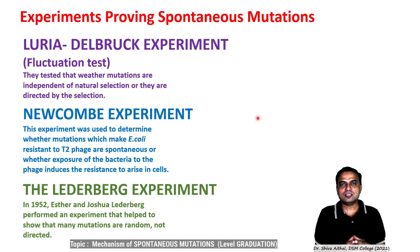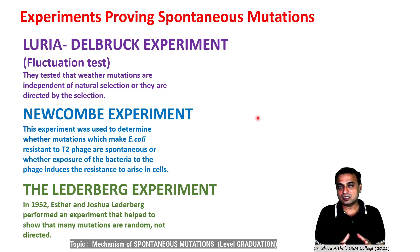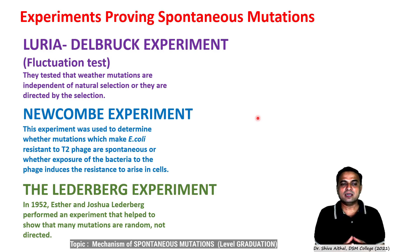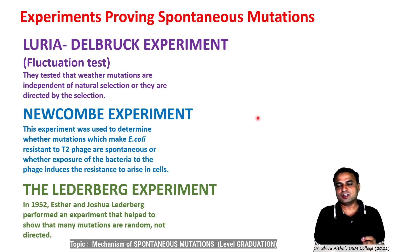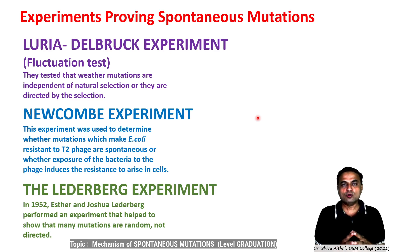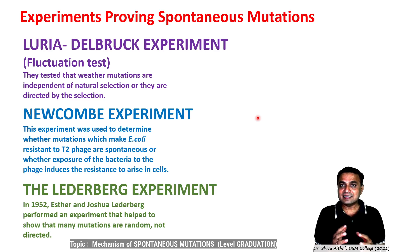There are three experiments in history that address this. The Luria-Delbrück experiment, famously called the fluctuation test, tested whether mutations are independent of natural selection or directed by selection. The Newcombe experiment used resistance of E. coli to phage infection. It was used to determine whether mutations making E. coli resistant to its parasite T2 phage are spontaneous in nature or whether resistance is acquired when infection occurs.